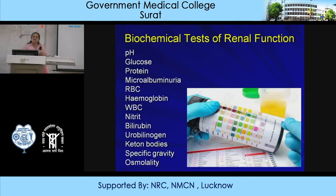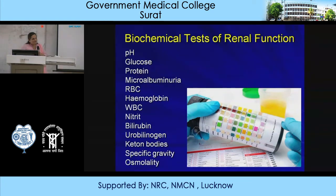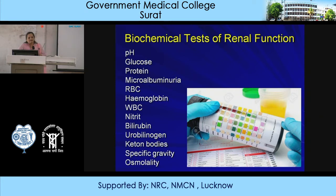Different biochemical tests done in the laboratory include: pH by pH meter or pH sticks, glucose by urine sticks or machines, protein and microalbuminuria analysis, RBCs, hemoglobin pigments, bilirubin - which can diagnose jaundice. WBCs are larger and rounded in cases of urinary infections. Tests also include nitrates, urobilinogen if in excess, ketone bodies, specific gravity, and osmolality.